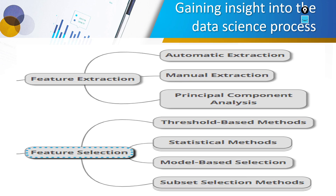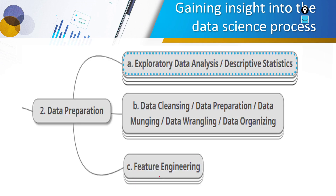In feature extraction, we use automatic or manual techniques. One important technique is PCA — Principal Component Analysis — but it does not provide proper explanation of features, so it is preferred only when explanation is not required. For feature selection, we have statistical methods, threshold-based methods, model-based methods, and subset selection methods. In this way we covered feature engineering, data cleaning, and exploratory data analysis related with data preparation.